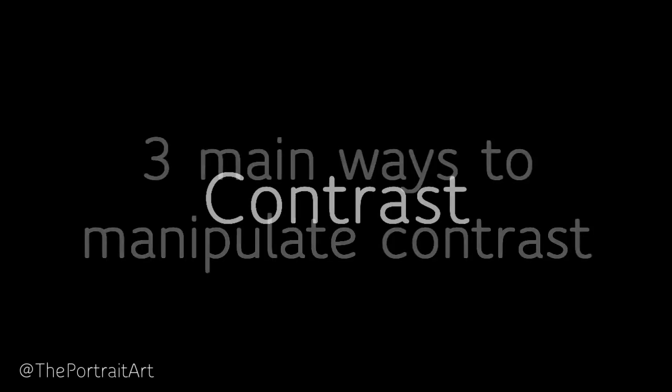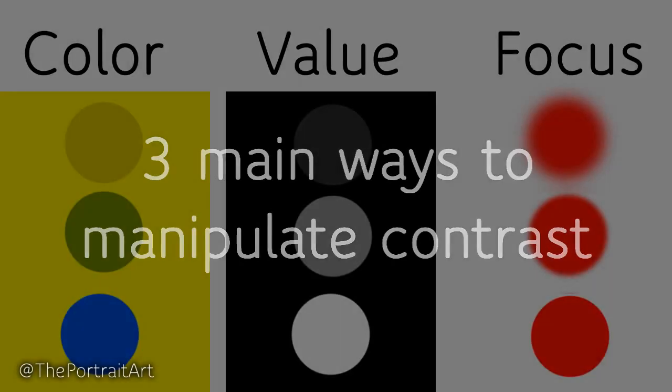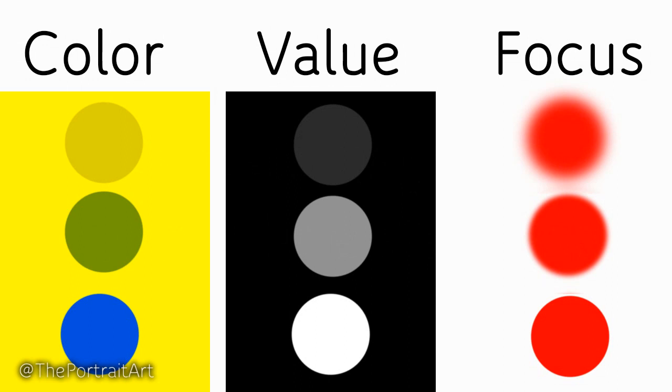You can achieve visual contrast by playing around with mainly three different properties: a difference in color, value, and focus, or some kind of combination.